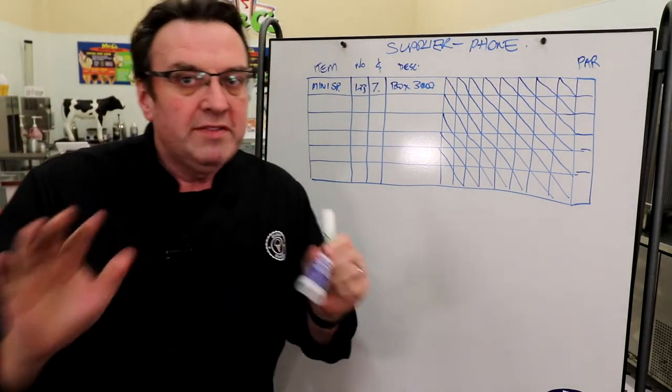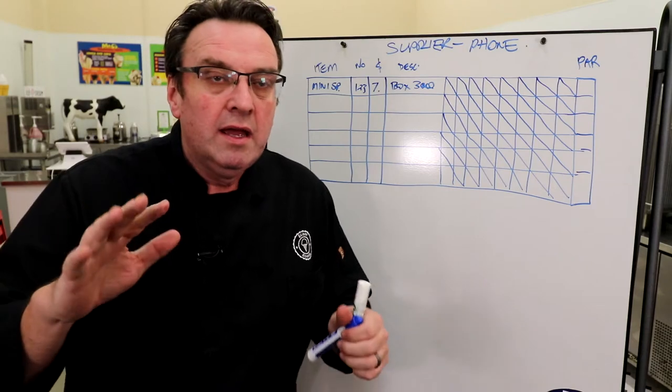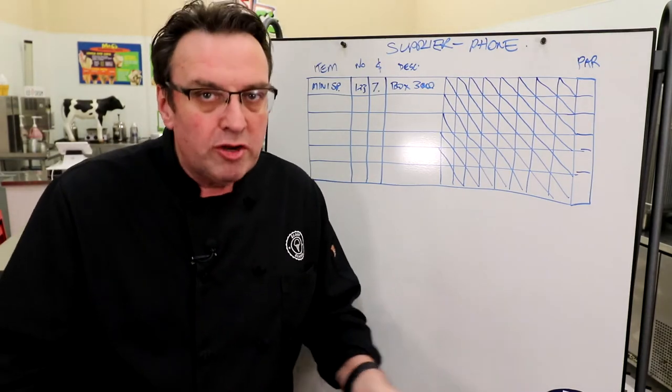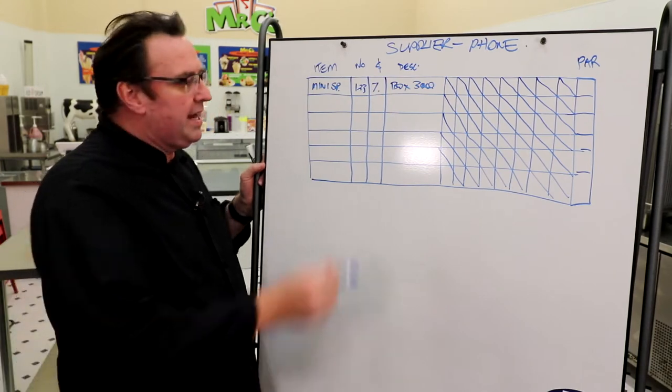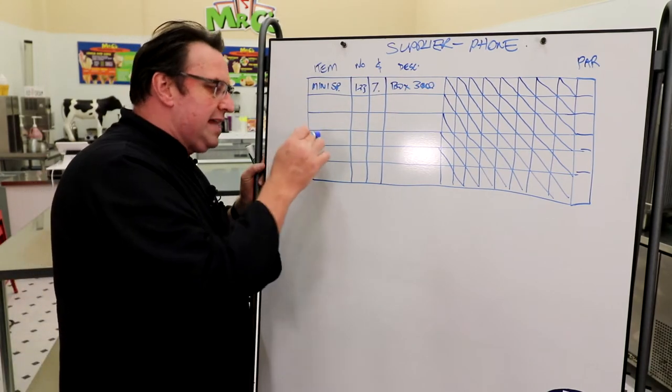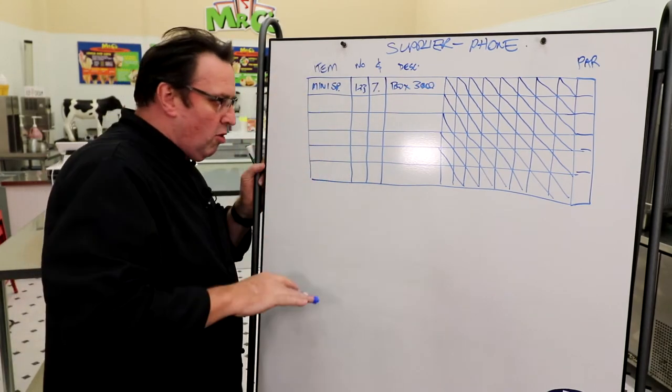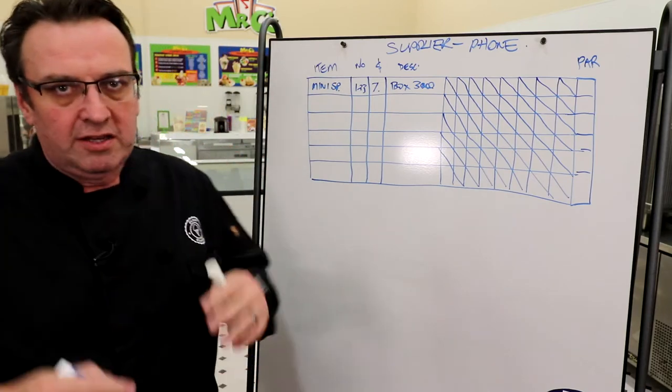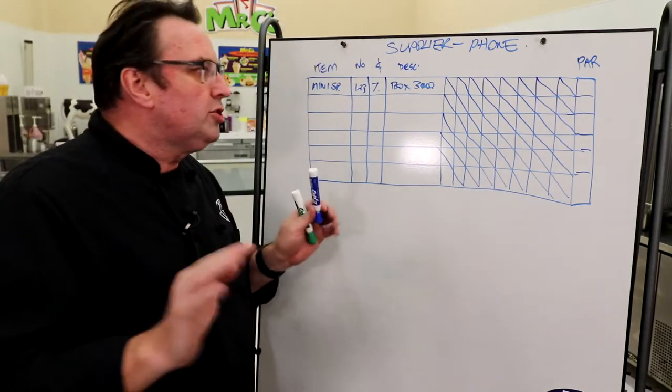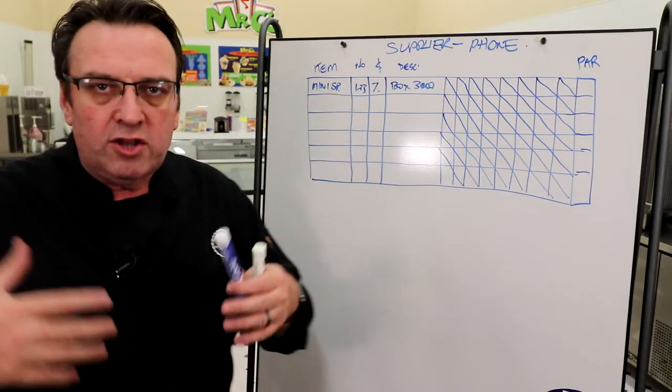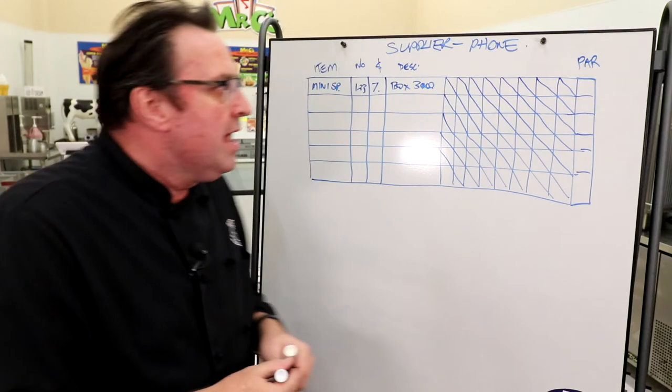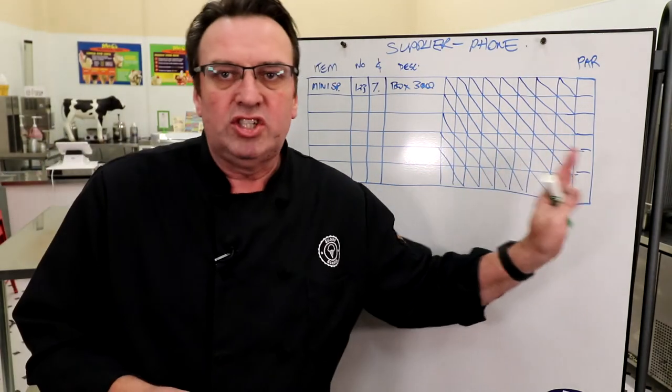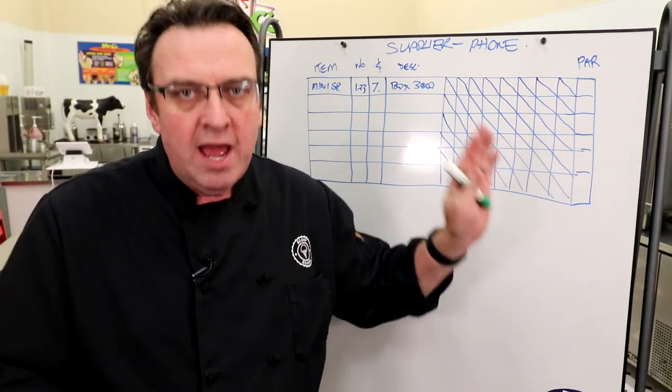Now, you'll have one of these sheets, as I said, for every supplier or every distributor that you have. So, wherever we're getting these mini spoons from, we're probably getting our plates, cups, napkins, all sorts of things. You might have a lot of different things down here, different lines. What you'll want to do here is once you've got all of your inventory and basically the bits and pieces that you get from the supplier, you'll want to have at the end of this sheet, what we call a par number.